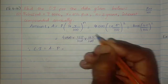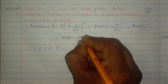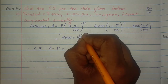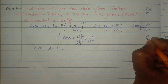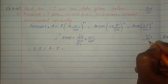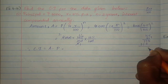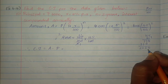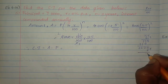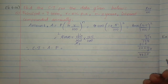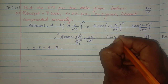Cancelling zeros, we get 105 × 21 = 2205, then 2205 × 2 = 4410. So the amount comes to 4410.